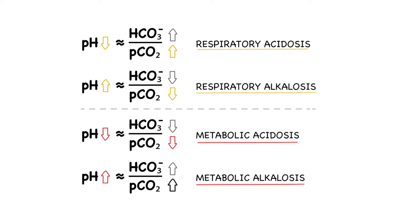In metabolic alkalosis, this also causes a compensatory rise in PCO2. So in metabolic problems, the change in pH and PCO2 are in the same direction. That constitutes a simple rule for identifying the primary acid-base problem. Let's check out a couple of cases — it's your turn now to use your newfound skills to identify the primary problem underlying the following quiz questions.